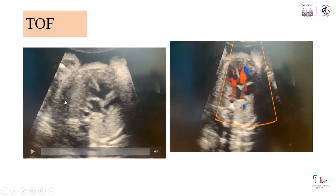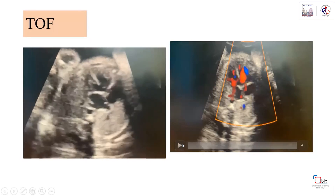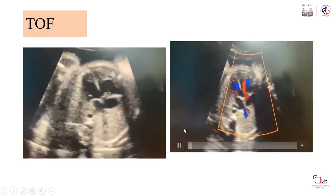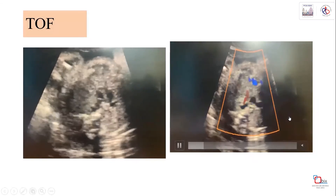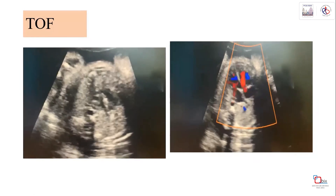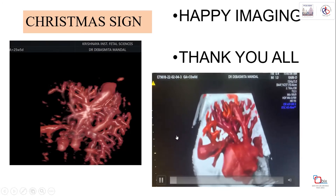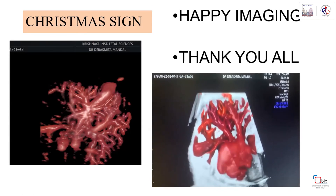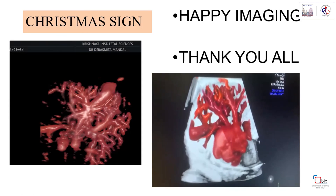This is a case of tetralogy of Fallot with pulmonary atresia, diagnosed on a medical college low-end machine. The overriding aorta, reversal flow in the pulmonary artery, VSD, and the melanin VSD are all demonstrated. The Christmas sign - the portal and hepatic veins crossing - is also seen. Happy imaging - imaging is a passion that pulls you out of the box. Thank you.